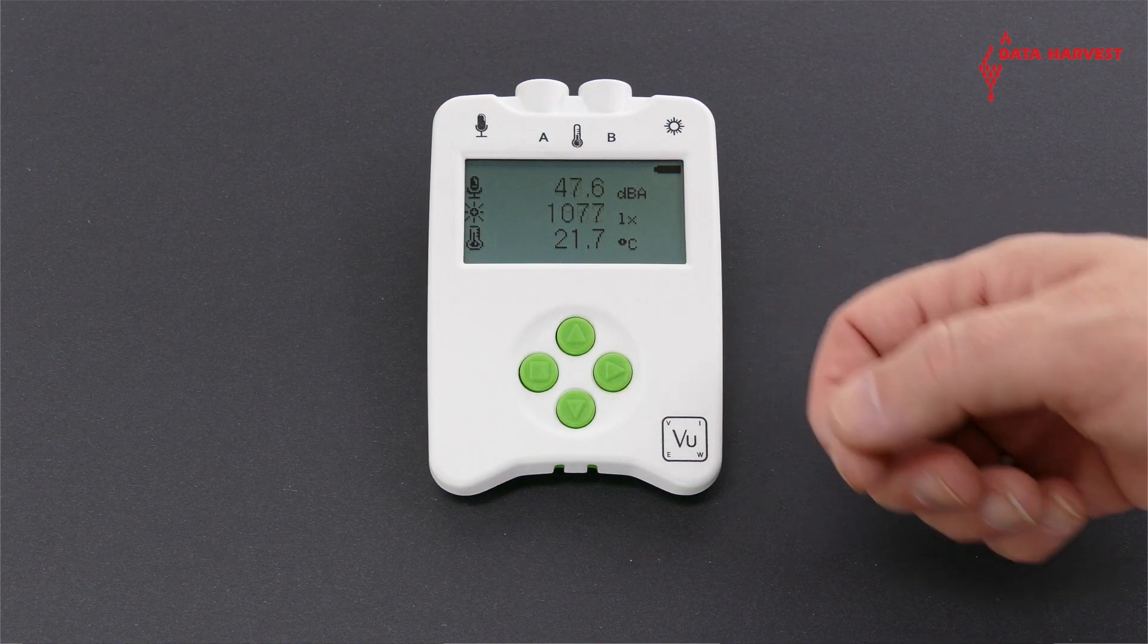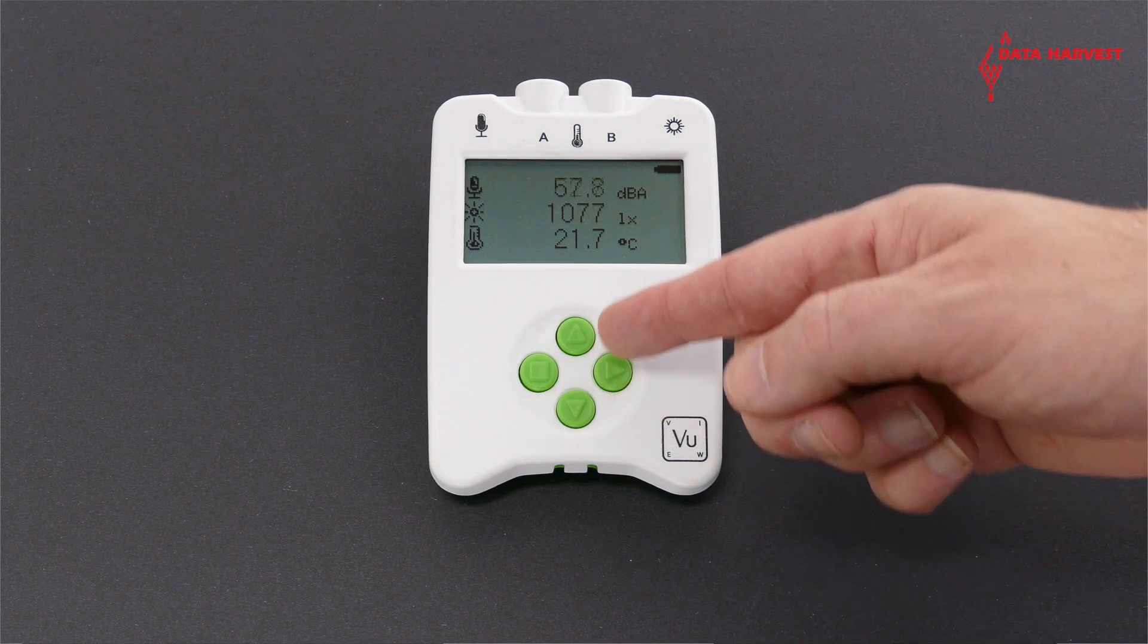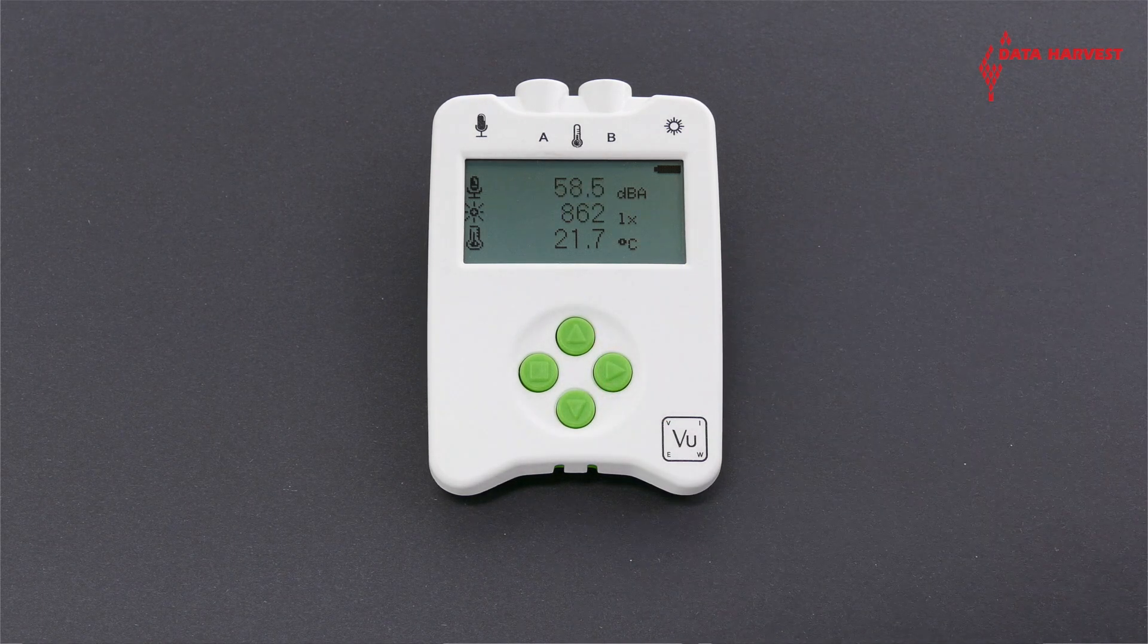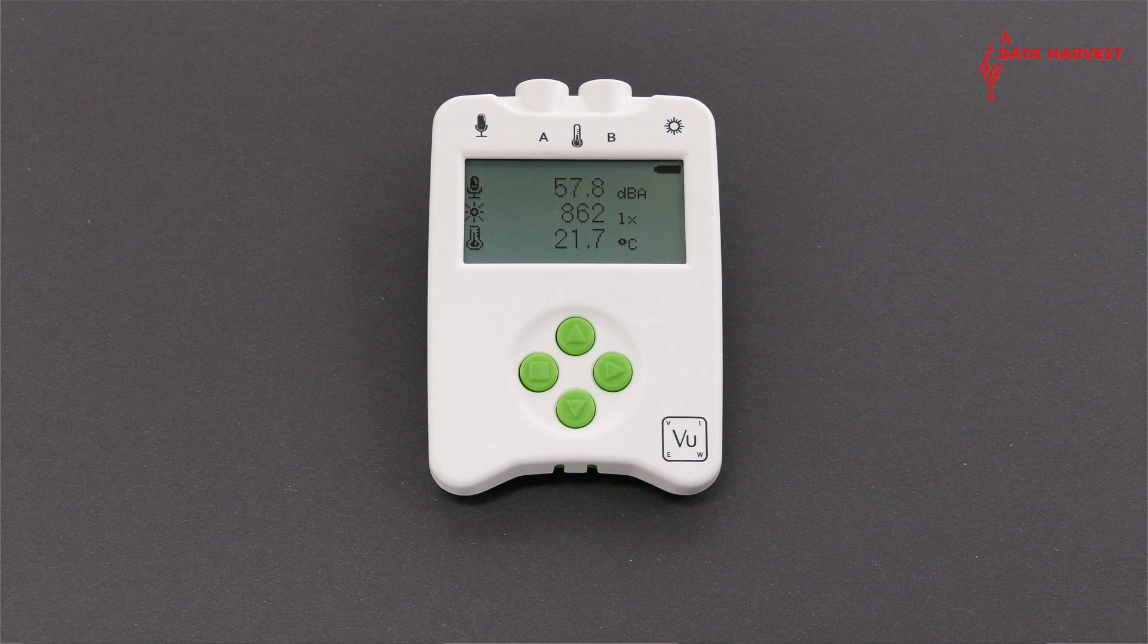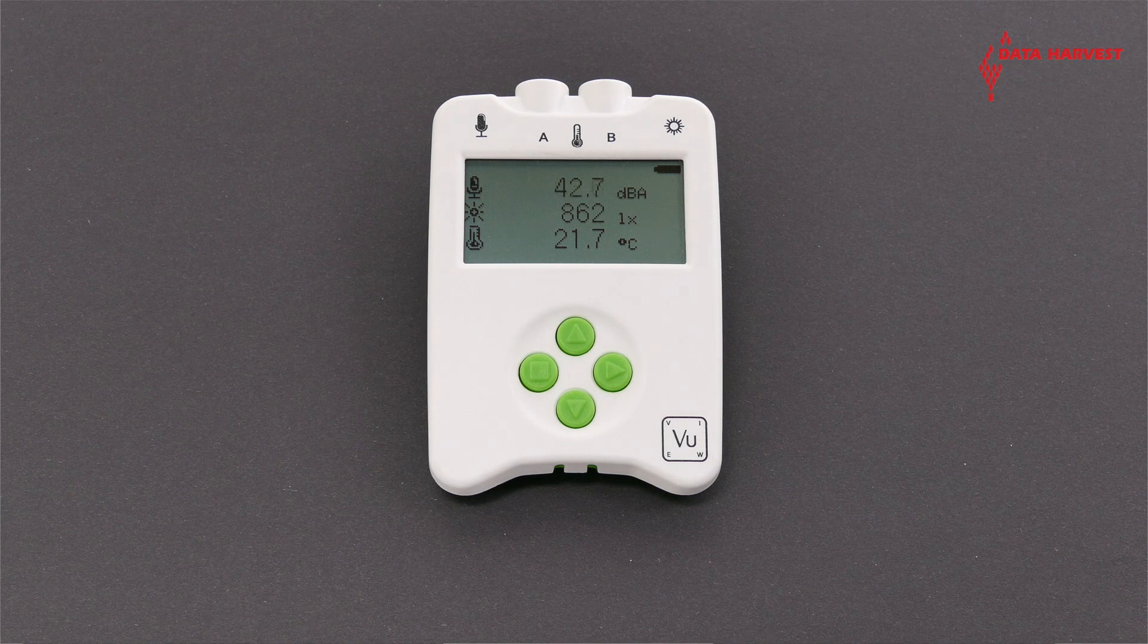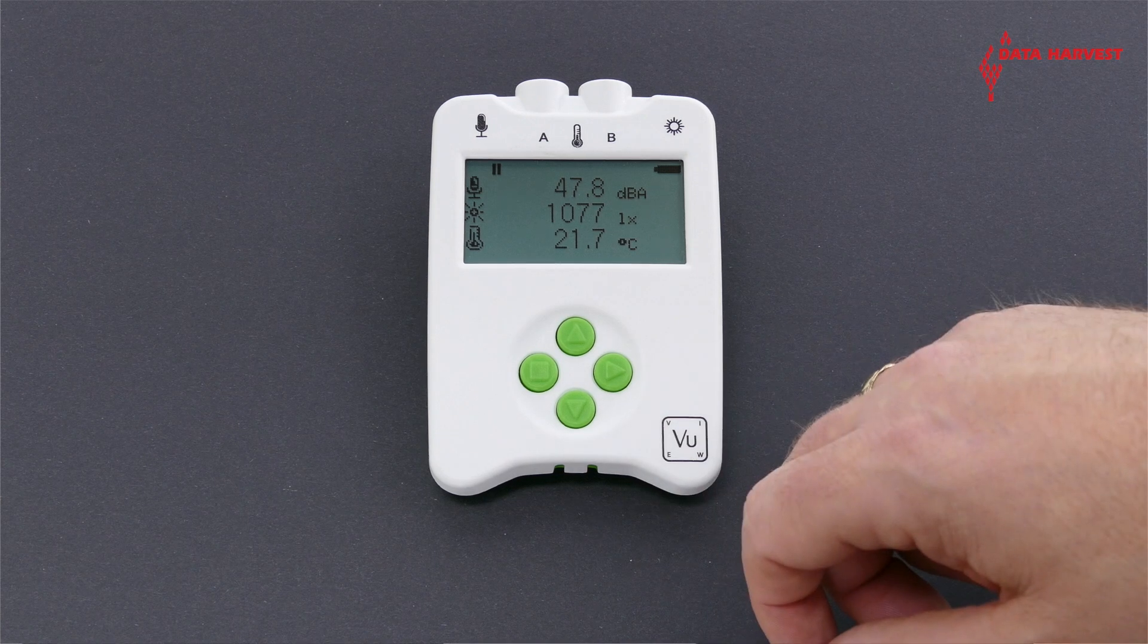The up and down arrows let you scroll through menus on the screen or browse measurements during data logging. The square button is used to stop data being recorded.